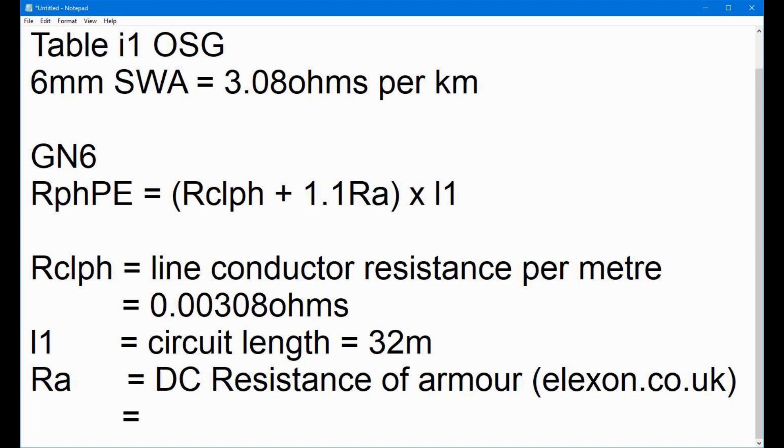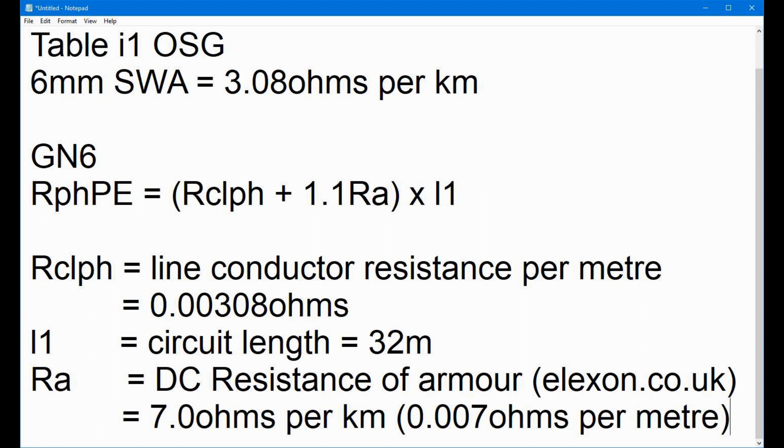So, in this case, what I found was for a 2 core 6mm SWA cable, the resistance is 7.0 ohms per kilometre. But, we need all these values in per metres. So, in actual fact, it is 0.007 ohms per metre. Are we all following this so far? I do hope so. So, we now have all the values for this lovely calculation. And, you might already now realise that the RphPE is the earth fault loop path value that we want to see when we actually do this test. And, you'll see on the video in a minute.